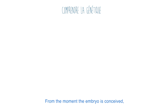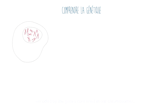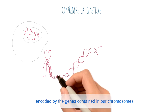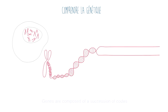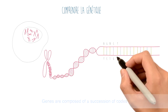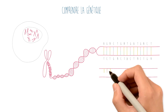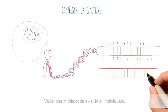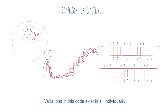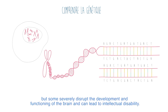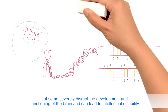From the moment the embryo is conceived, our body develops from a unique genetic program encoded by the genes contained in our chromosomes. Genes are composed of a succession of codes that allow the production of molecules necessary for the growth and proper functioning of the body. Variations in this code exist in all individuals — most of them are harmless, but some severely disrupt the development and functioning of the brain and can lead to intellectual disability.